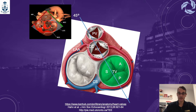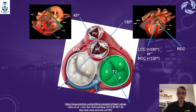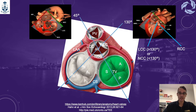At 130 degrees, we can see the mid-esophageal long axis view of the aortic valve, where the right coronary cusp is below and the upper cusps can be either the non or the left. The more the angle, the more likely it is to be the left. The less the angle, the more likely it is to be the non.